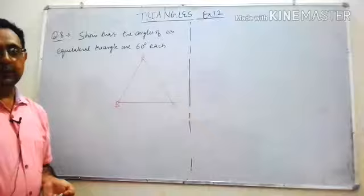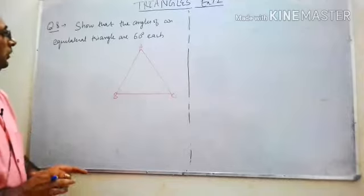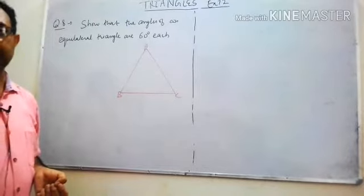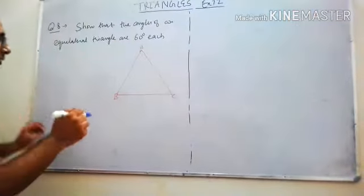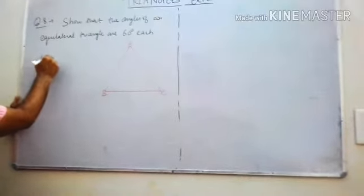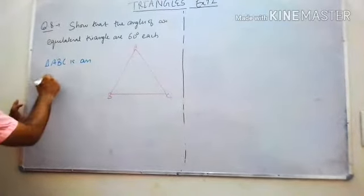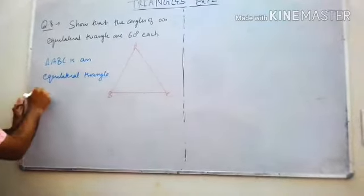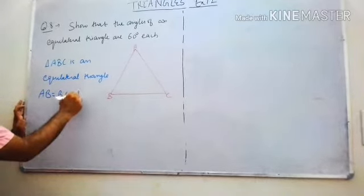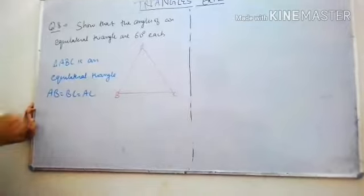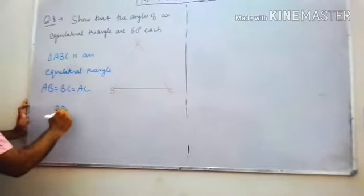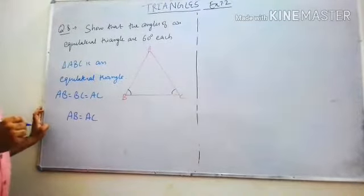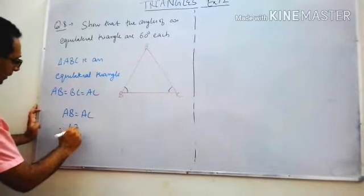Next question: show that all angles of an equilateral triangle are 60° each. Since triangle ABC is equilateral, AB = BC = AC. Taking AB equal to AC: angle B equals angle C — angles opposite to equal sides. This is equation one.